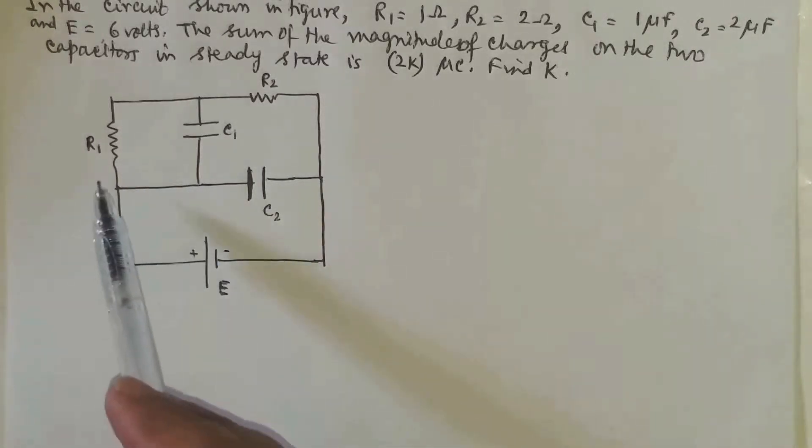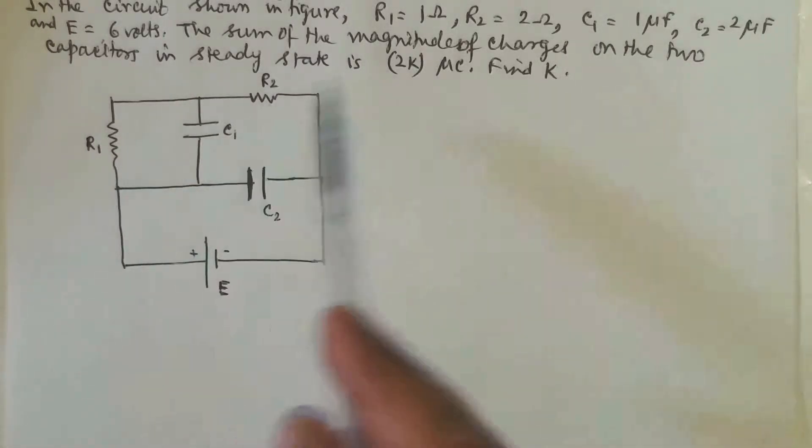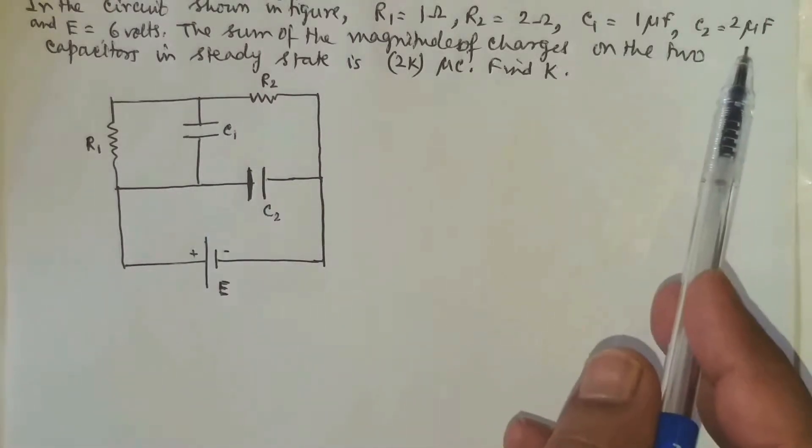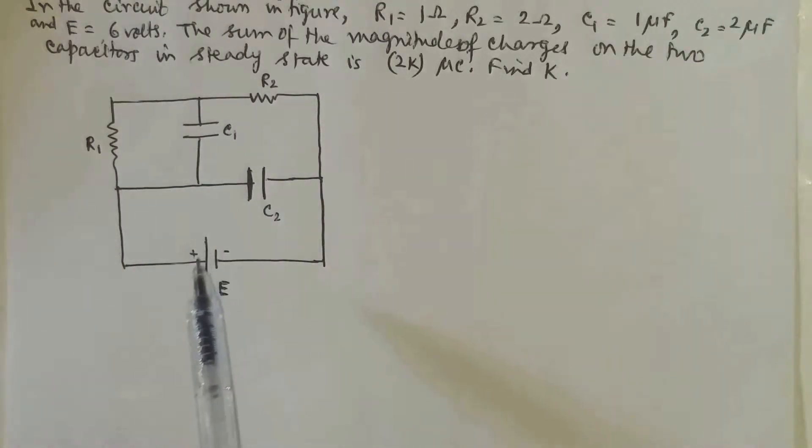In the question they have given that these are two resistances, 1 ohm and 2 ohm, and these two capacitors C1, C2, 1 microfarad and 2 microfarad respectively, and this is the cell which is 6 volts.